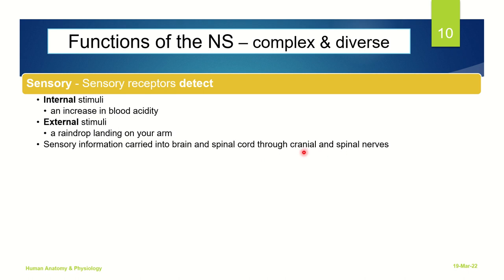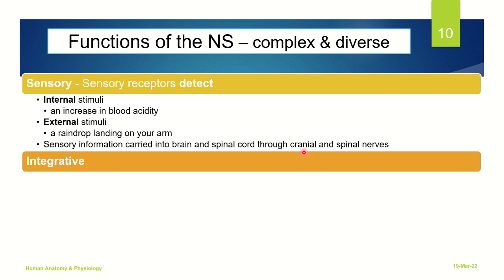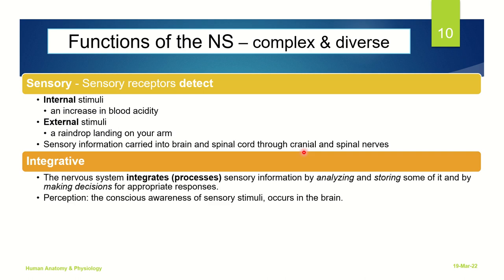The second important function is integrative. In the brain, the information sent by the sensory receptors is integrated or processed, analyzed and then stored — either some of it or all of it. Further, decisions are made so that an appropriate response can be taken. For example, perception is nothing but the conscious awareness of sensory stimuli, and this is something that occurs in the brain.